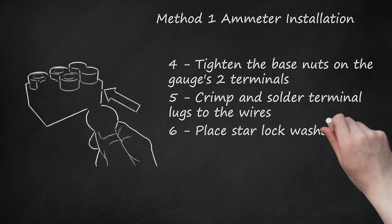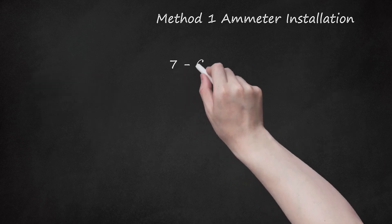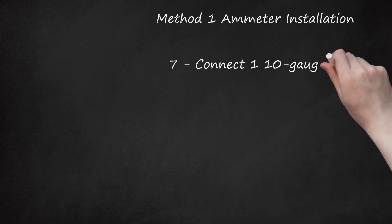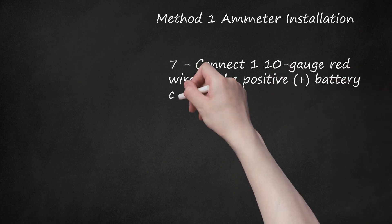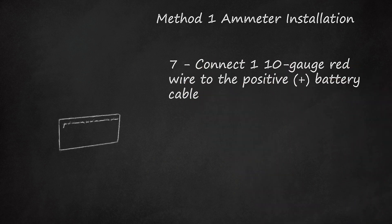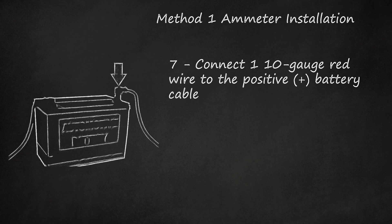Step 6: Place star lock washers on both sides of the terminals. Step 7: Connect one 10 gauge red wire to the positive battery cable. Connect the other wire to the wire leading to the alternator. Consult your owner's manual and specific gauge instructions for further wiring details.